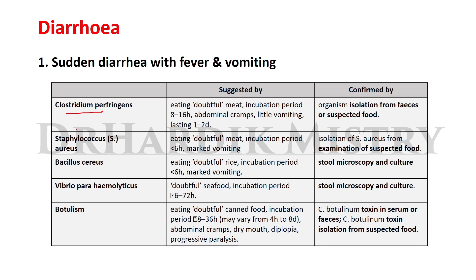Clostridium perfringens is suggested by eating doubtful meat, incubation period 8–16 hours, abdominal cramps, little vomiting, lasting one to two days, confirmed by organism isolation from feces or suspected food. Staphylococcus aureus has an incubation period under six hours with marked vomiting, confirmed by isolation from suspected food. Bacillus cereus is linked to doubtful rice, incubation under six hours, marked vomiting, confirmed by stool microscopy and culture.